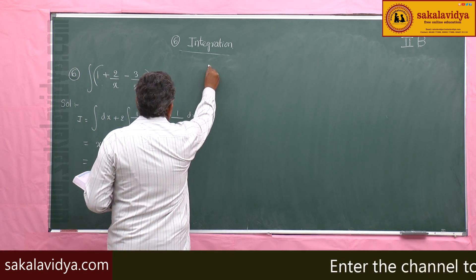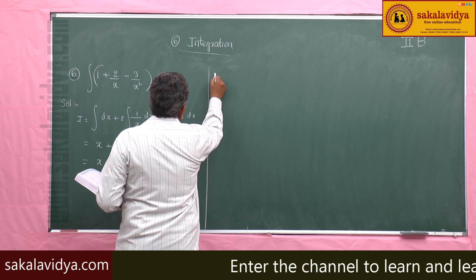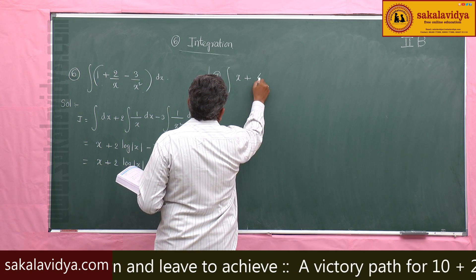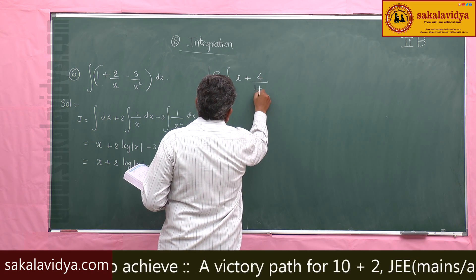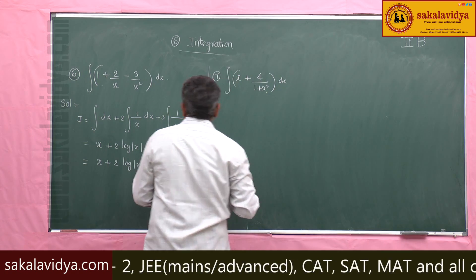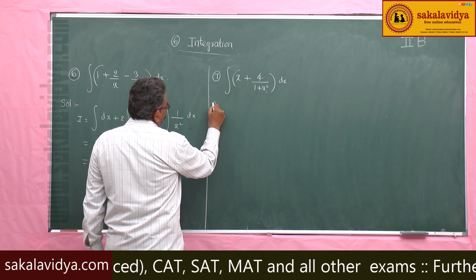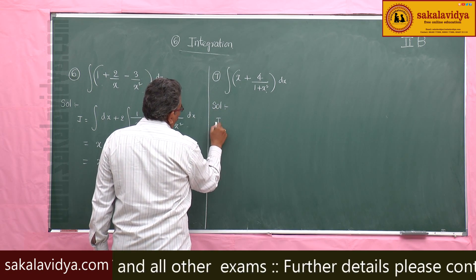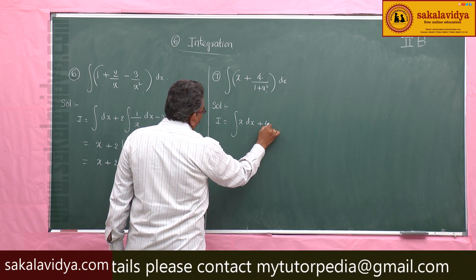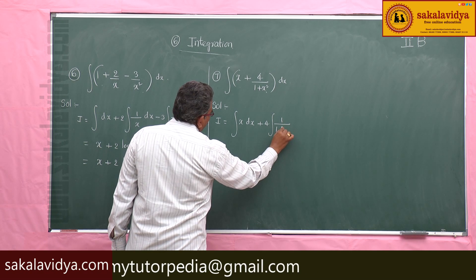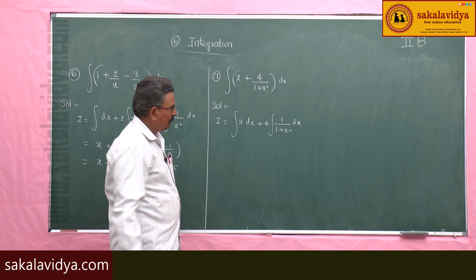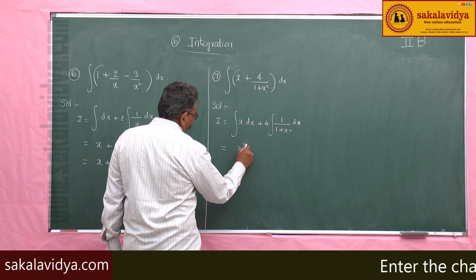Next, evaluate integral of x plus 4 by 1 plus x square dx. Let us find out the solution. I is equal to integral of x dx plus 4 common integral of 1 by 1 plus x square dx, since 4 is a constant we have taken it common. x dx means x square by 2.